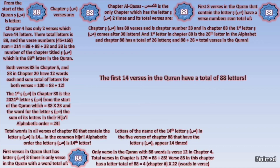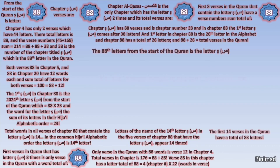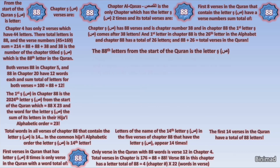And if all of this is not mind-boggling enough, think about the following. The 88th letter from the start of the Quran is the letter Saad. Chapter Saad has 88 verses, and chapter Al-Qasas also has 88 verses. But chapter Al-Qasas is also the chapter title with the greatest number of the letter Saad in its name, which is two times.